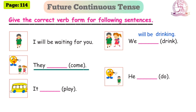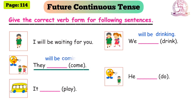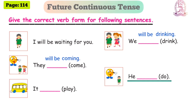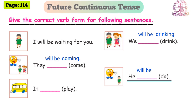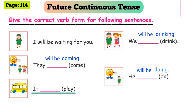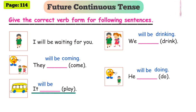Next: 'They will be coming.' Verb 'come' plus '-ing' = 'coming'. 'They will be coming.' Next exercise: 'He will be doing.' Subject: he, future continuous tense, auxiliary verb: will be. 'Do' plus '-ing' = 'doing'. 'He will be doing.' Next: 'It will be playing.' Subject: it, auxiliary verb: will be. 'Play' plus '-ing' = 'playing'. 'It will be playing.'